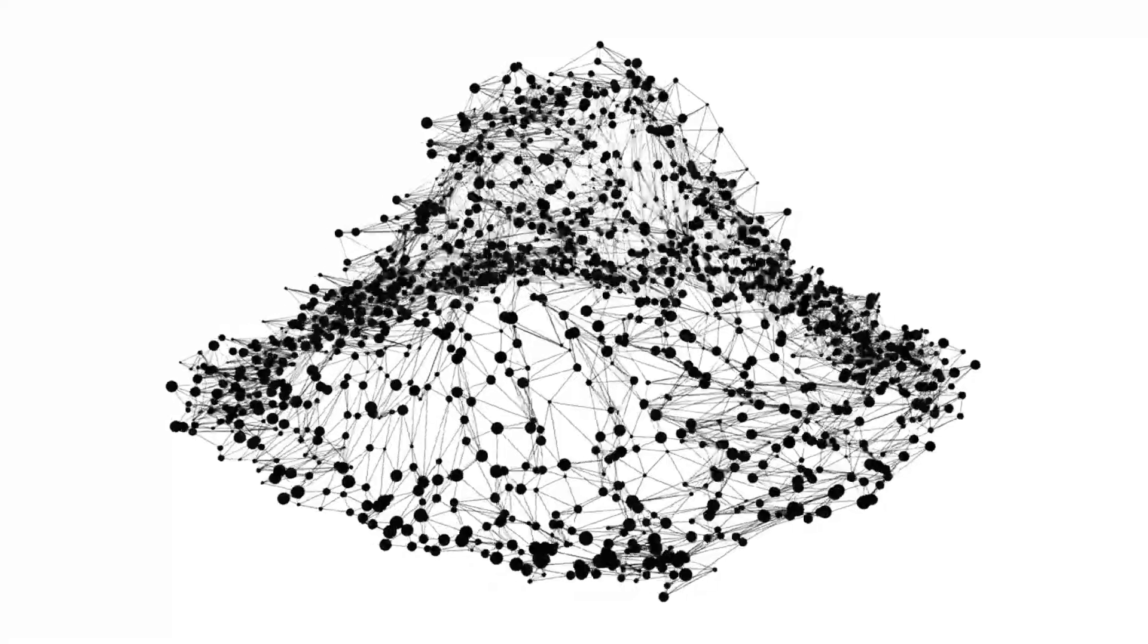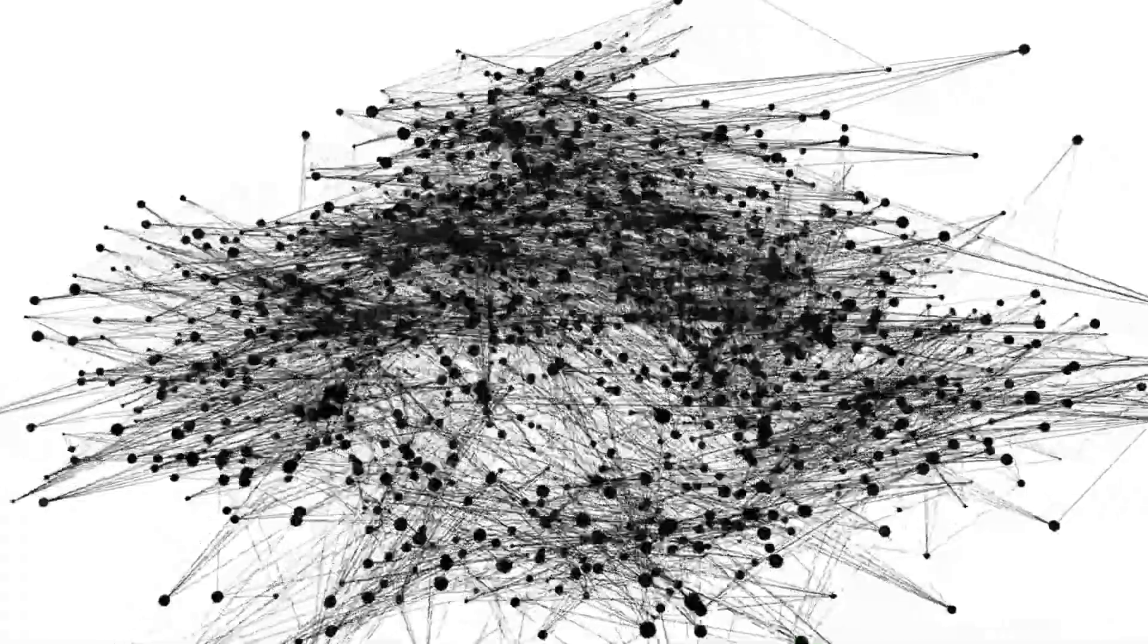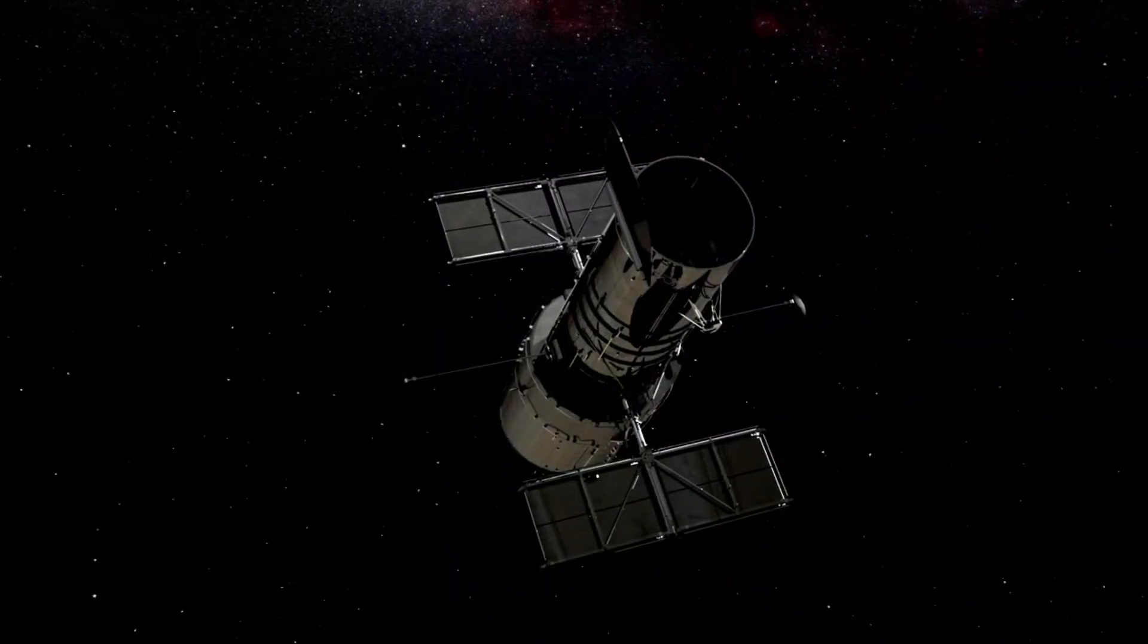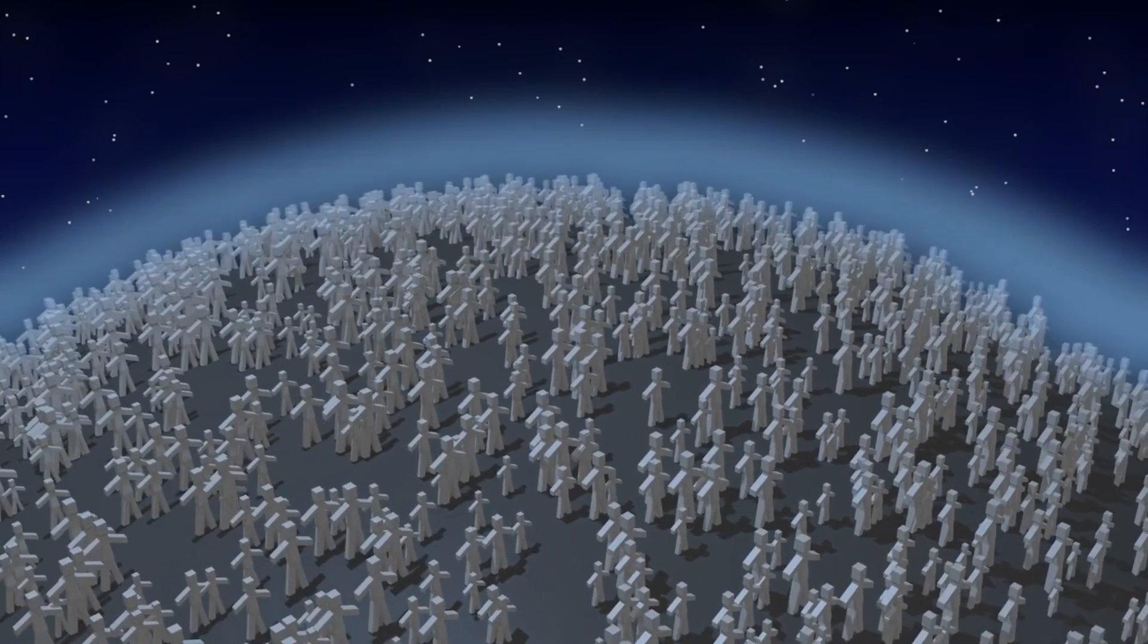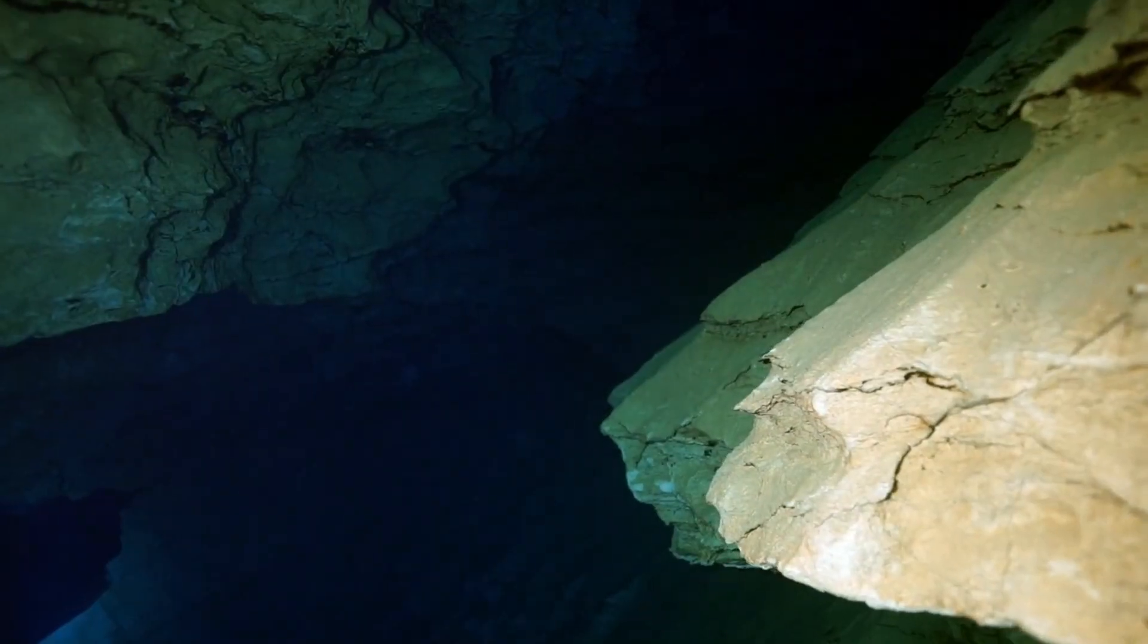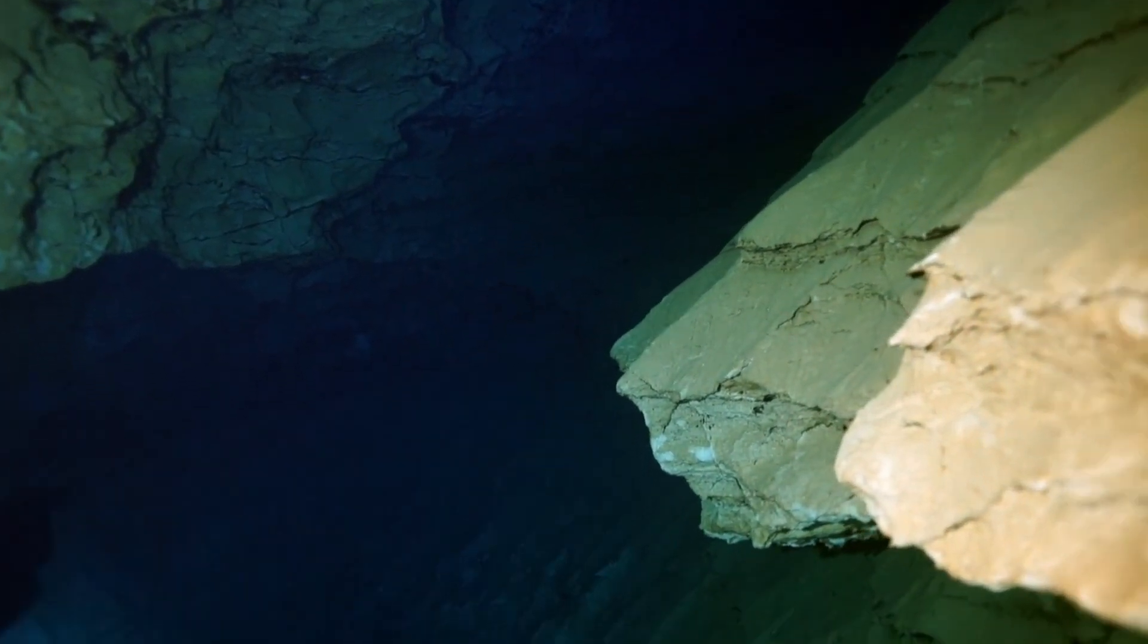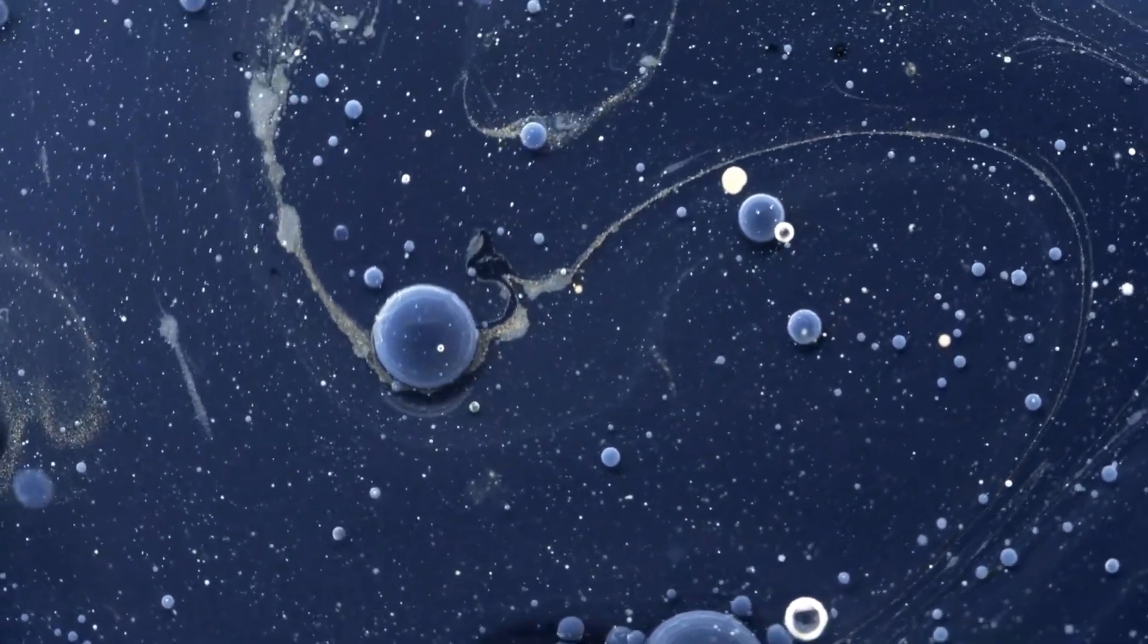These discoveries compel us to broaden our perspective on what makes a celestial body habitable. If Pluto, once branded a desolate, frozen world, can maintain a liquid ocean beneath its icy facade and host the chemical precursors to life, then the criteria for habitability must be re-examined. Could there be life, even if only in microbial form, thriving in an environment so alien and extreme? While definitive proof remains elusive, the tantalizing evidence has already set the scientific community abuzz, prompting us to reconsider our search for life not only within our solar system but also on distant exoplanets and icy moons.